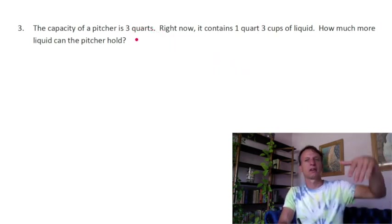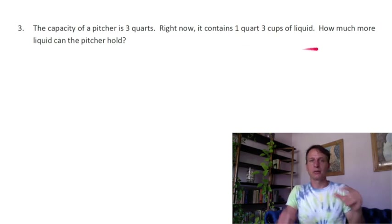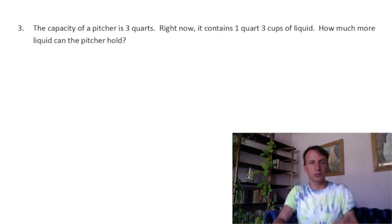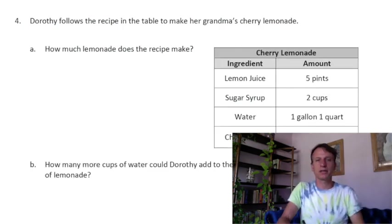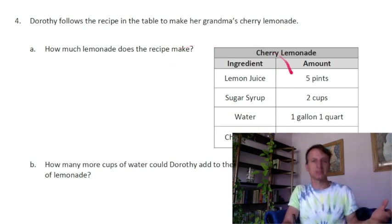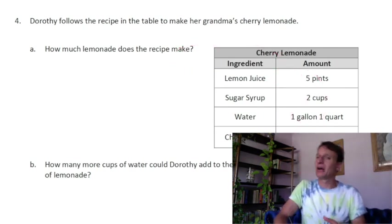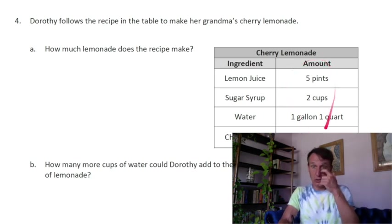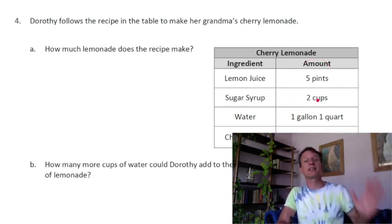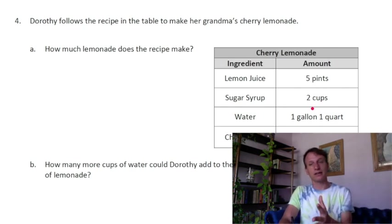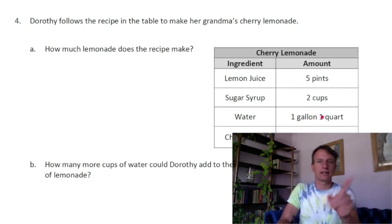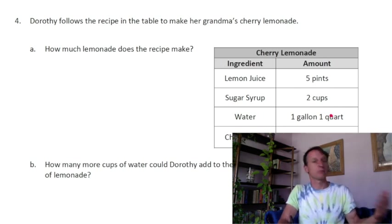The capacity is three quarts, with one quart and three cups already in there. Draw the tape to show three quarts, mark the known part as one quart and three cups, and find the unknown part. Another word problem asks for the total — you're adding pints, cups, gallons and quarts, and quarts all together. Students can put everything into cups and add, or take it step by step adding one gallon and one quart to three quarts and converting.